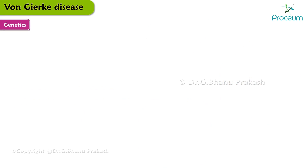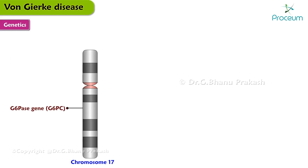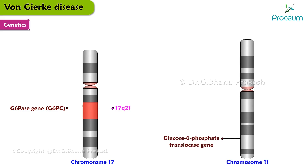The genetics of Von Gierke disease are as follows. The G6Pase, or glucose 6-phosphatase gene, G6PC, is located on chromosome 17Q21, while the glucose 6-phosphate translocase gene, solute carrier family 37, member 4, or SLC37A4, is localized to chromosome 11Q23.